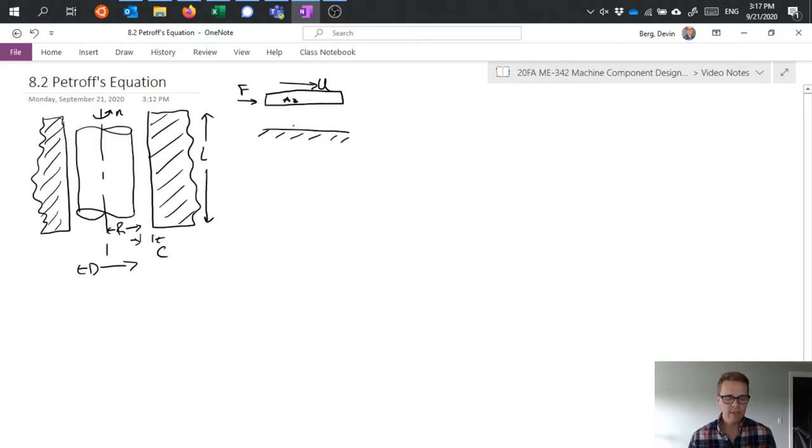So when we do this we typically expect to see that the velocity as we approach the moving surface from the fixed surface goes from zero to moving at the velocity of the fixed surface as we move further away from this in y or something like that.